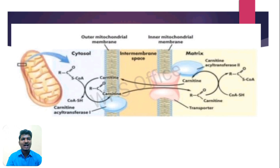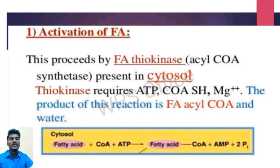There are many types of fatty acid oxidation: Alpha Oxidation of Fatty Acids, Beta Oxidation of Fatty Acids, and Omega Oxidation of Fatty Acids. Beta Oxidation of Fatty Acids is subclassified into 3 stages.